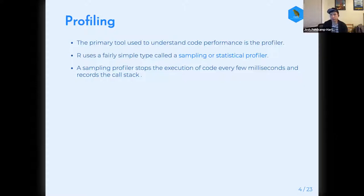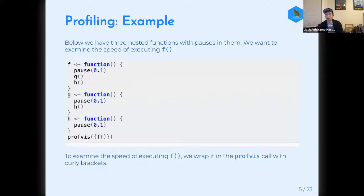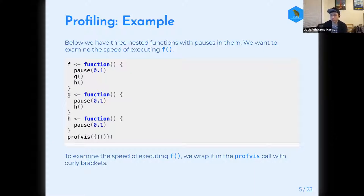I haven't heard of other versions of profiling in R, so if you have another version, feel free to let me know. Here's a quick example from Hadley. You have these three nested functions: F has G and H inside it, G has H inside itself, and H just has a pause. To see what's going on in terms of timing, you just wrap profvis on it with curly brackets. I've been using curly brackets all the time — I assume you have to do that.